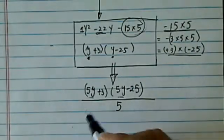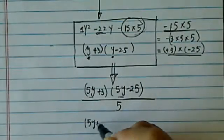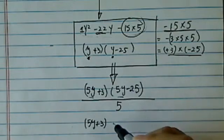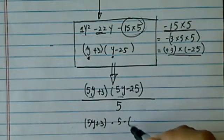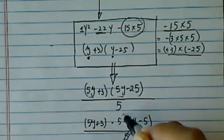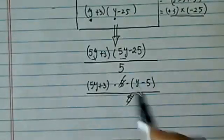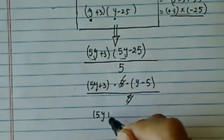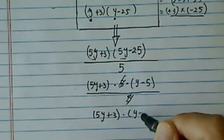Now, from here, simplifying by pulling out a coefficient of 5 here, we'll have y minus 5 here, divided by 5. And what do you know? 5 cancels out. And our final answer is 5y plus 3 times y minus 5.